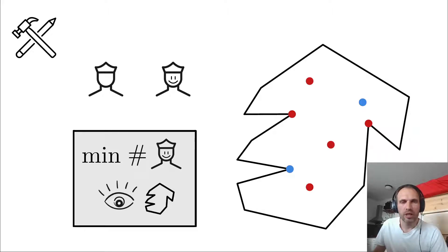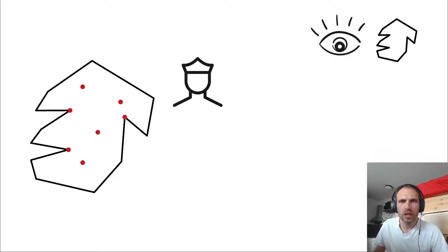So specifically they built this integer linear program, which optimized the number of guards, under the constraints of the whole polygon must be seen. And then they solve this ILP and ILP solvers are in practice very fast.